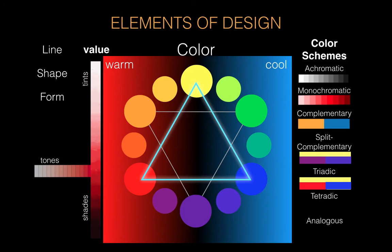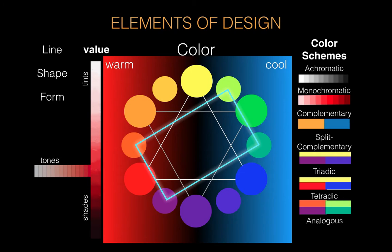Triadic — tri being three — could be expanded to four colors. Tetradic is our next set, where you draw a square or rectangle on the color wheel. So tetradic: red-orange plus yellow-green plus blue-green plus red-violet gives you a tetradic set. You can rotate this square or rectangle so that it fits anywhere on the color wheel and get a useful color scheme of four colors.